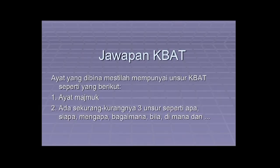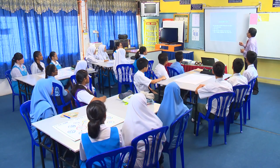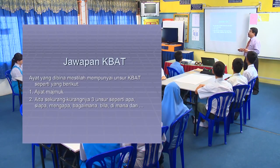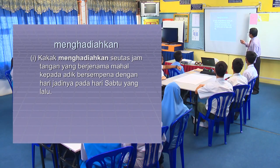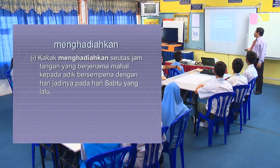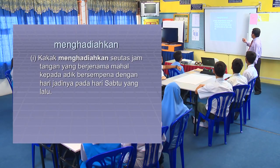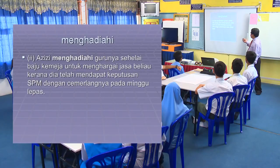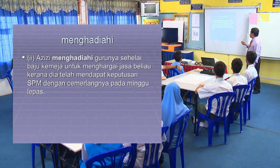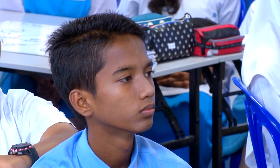Ayat yang ada unsur kebat: pertama, ayat tersebut mesti ayat majmuk. Kedua, ada sekurang-kurangnya tiga unsur seperti apa, siapa, mengapa, bagaimana, bila atau di mana. Contoh dengan menghadiahkan: Kakak menghadiahkan seutas jam tangan yang berjenama mahal kepada adik bersempena dengan hari jadinya pada hari Sabtu yang lalu. Contoh dengan menghadiahi: Azizi menghadiahi gurunya selai baju kemeja untuk menghargai jasa beliau kerana dia telah mendapat keputusan SPM dengan cemerlang pada minggu lepas.